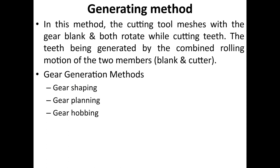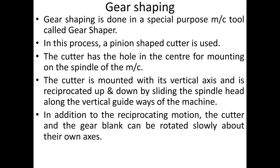Gear generation methods include gear shaping, gear planning, and gear hobbing. Gear shaping is done on a special-purpose machine tool called a gear shaper. In this process, a pinion-shaped cutter is used; the cutter has a hole in the center for mounting on the spindle of the machine.